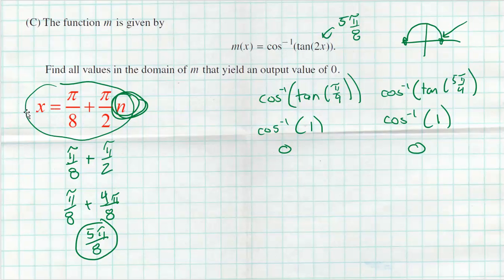That was a pretty tough problem. Hopefully the explanation made sense. Hopefully everyone got six points on this, and even if you messed up part C, hopefully you still got four points, because the previous problems were not that bad.